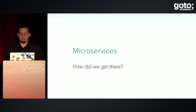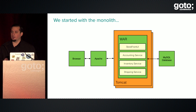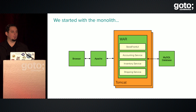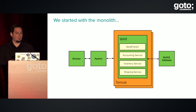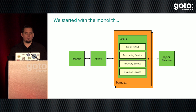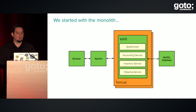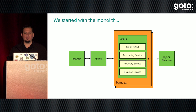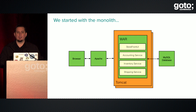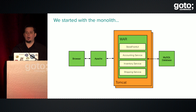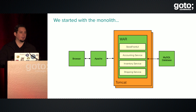We started with the monolithic application architecture. In this deployment we have one WAR artifact with modules inside: a storefront UI, an accounting service, an inventory service, and a shipping service. We have modularity in this deployment, but the problem is that when you have one deployment pipeline and everybody's working off that pipeline, things are going to slow down. You're going to have conflicts, you're going to need to coordinate more, and this introduces a bunch of problems.